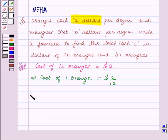This implies cost of 20 oranges is equal to 20A upon 12 dollars. This is equal to 5A upon 3 dollars.